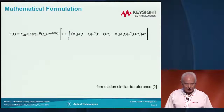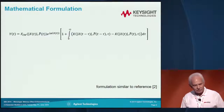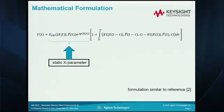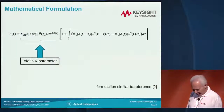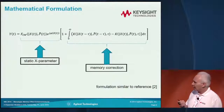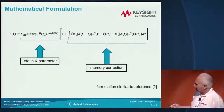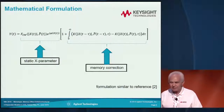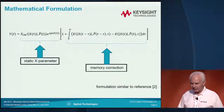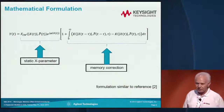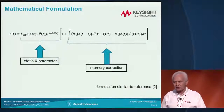The mathematical formulation of the model that accounts for memory effects is shown here. This part is the static X parameter, as you know. What we have under the integral represents the memory correction. If we know the kernel K, then we will be able to evaluate that term, taking the history into account. That formulation is somewhat similar to reference 2, but also a little bit different.